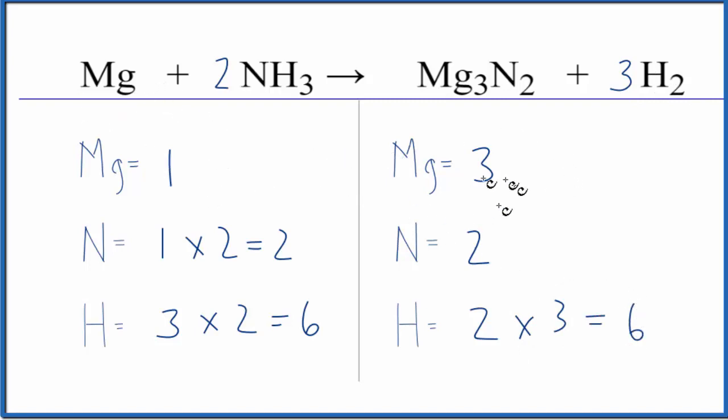And remember, we said all we need to do to get the three magnesiums here is to put a three. One times three, that's three, and we're done. This equation is balanced.